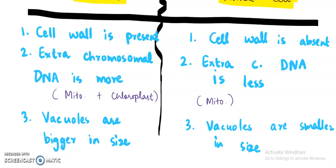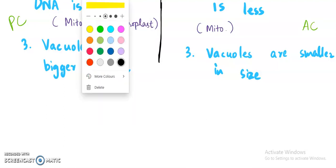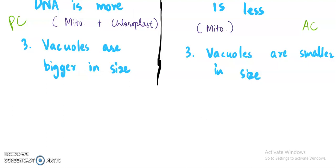Now next point will be. Remember we are writing for plant cell here on the left side and animal cell here on the right side. We will be writing some more differences.